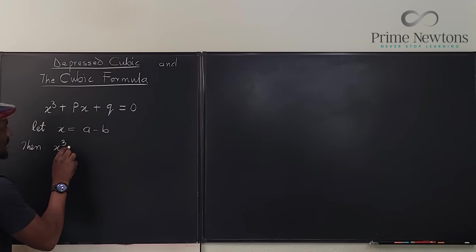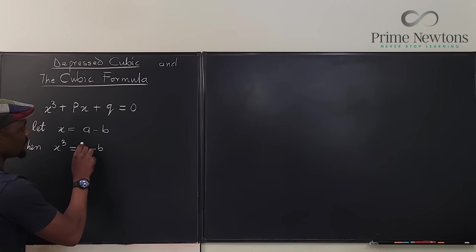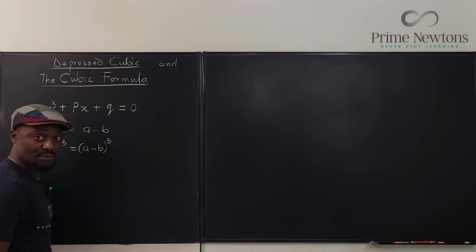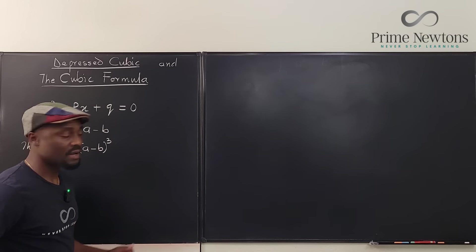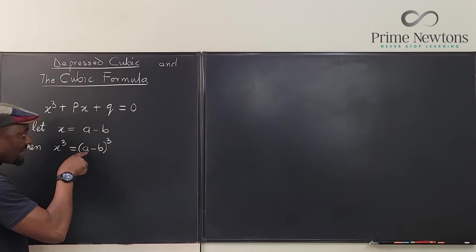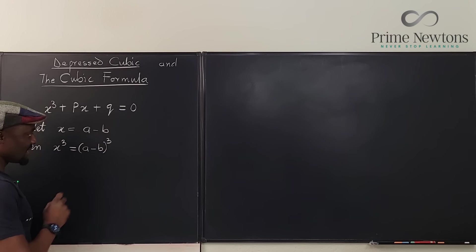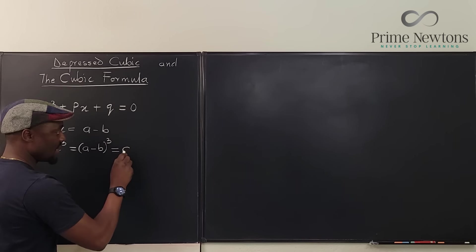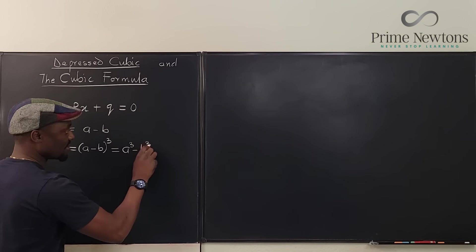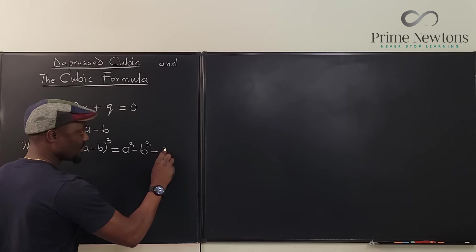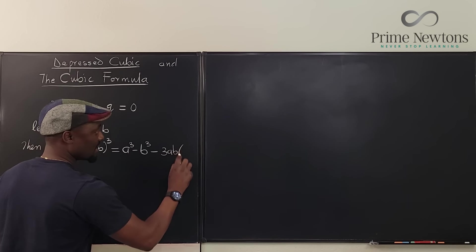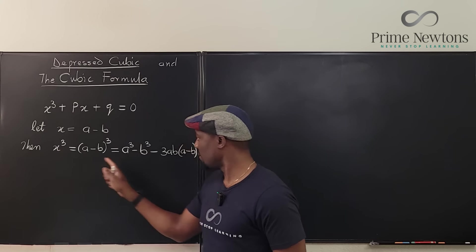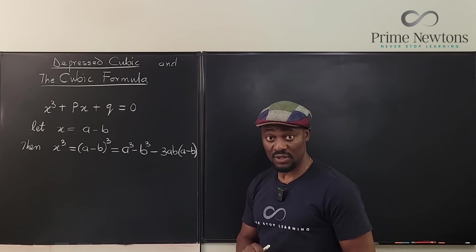x cubed is the same thing as (a minus b) cubed, because we said let x be a minus b. If you expand this, you're going to get a cubed minus b cubed, and then minus 3ab times (a minus b). This is algebra — if you cube this out, this is what you can factor it into.